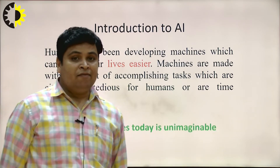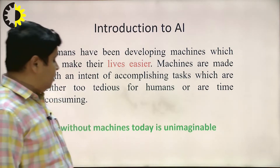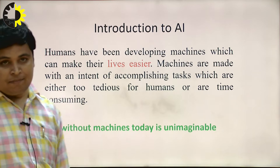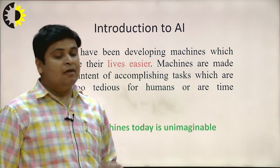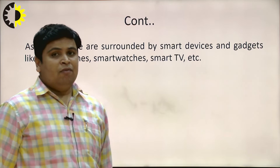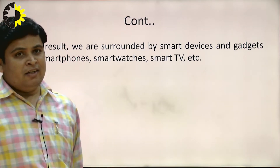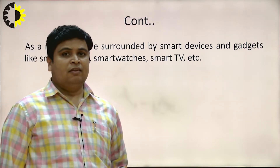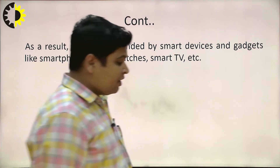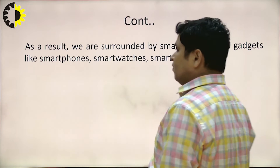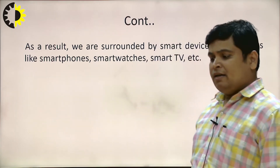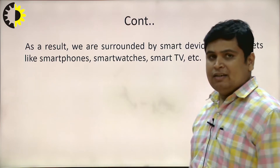Because life without machines today is unimaginable. So AI comes into the picture. As a result, we are surrounded by smart devices and gadgets like smartphones, smart watches, smart TVs. But what is the purpose of AI? What are the different types of AI applications in a real life scenario — today I will discuss.